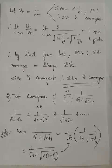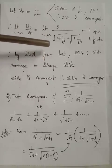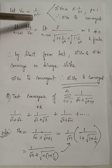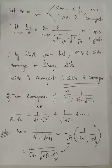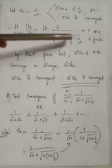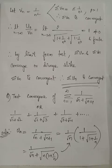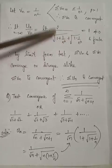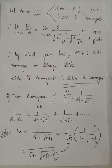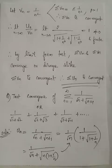We evaluate the limit as n tends to infinity of un by vn. After cancelling n squared common to both denominators, we apply the limit to the expression 2 divided by root(1 plus 1/n⁴) plus root(1 minus 1/n⁴). As n tends to infinity, 1 by n⁴ tends to 0, leaving 2 divided by root(1) plus root(1), which equals 2 divided by 2, giving the limit equal to 1.